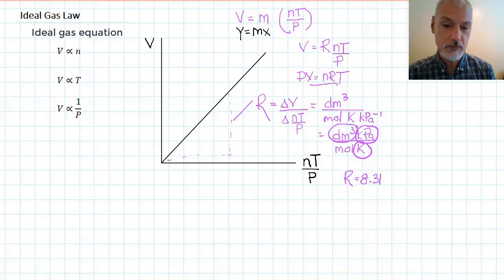Now, that's not the only set of units we can use here to use this 8.31. Consider the following. A decimetre cubed is the same as a cubic metre, divided by a thousand. A kilopascal is the same as a thousand pascals. On the bottom, I would still have units of moles and kelvin. Now, in this case, the thousands will cancel.